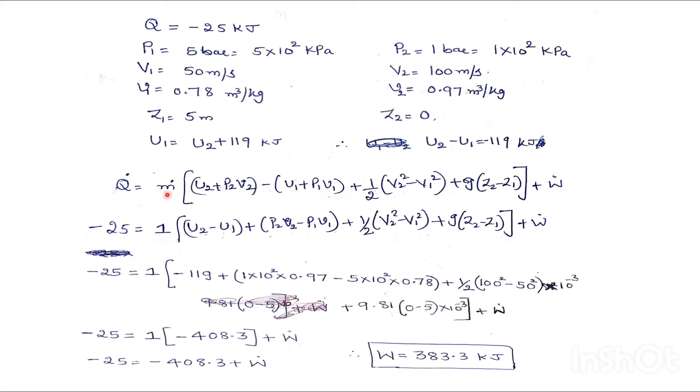Minus 25 for a kg of fluid. M he has given 1. So U2 minus U1 is nothing but minus 119 from this equation. I have substituted here.